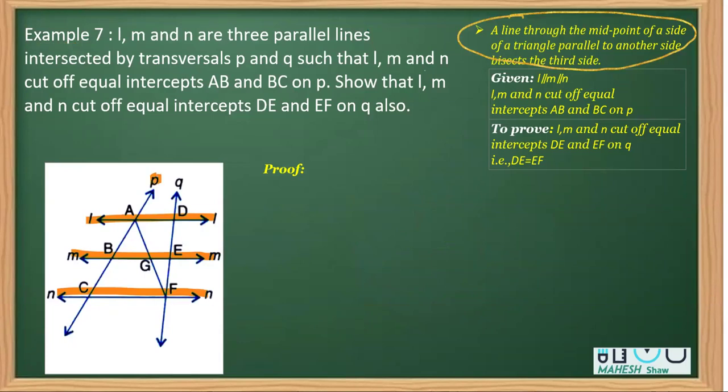Further, it says that the transversal P makes equal intercepts, they get cut into equal intercepts. By that, it means to say that we have AB is equal to BC, and the to prove part is that we have to prove DE is equal to EF. This is what the question says.